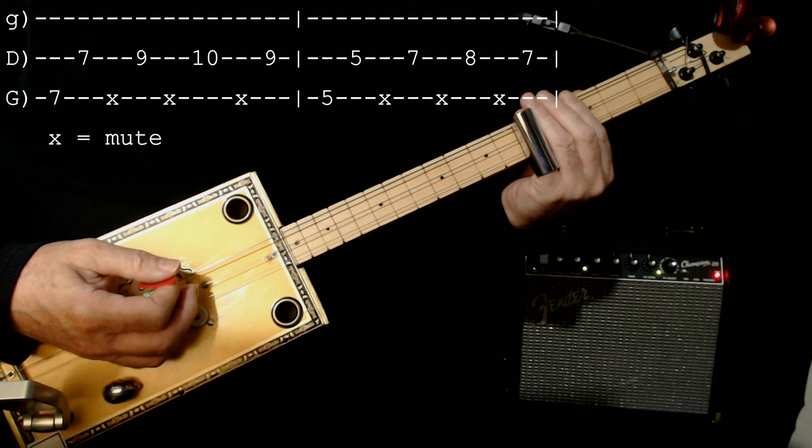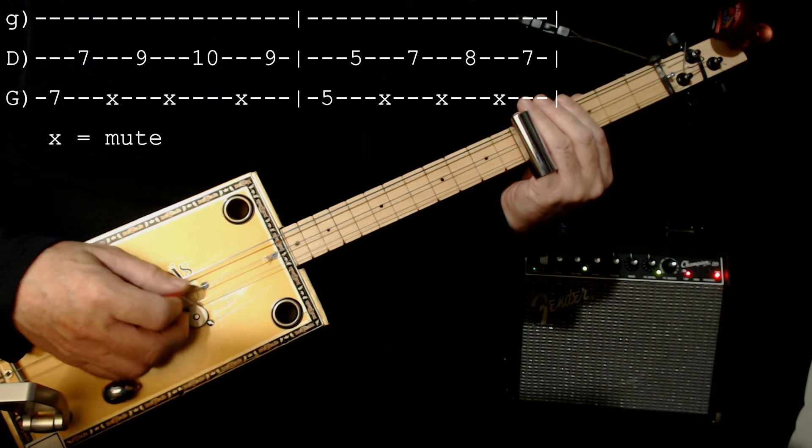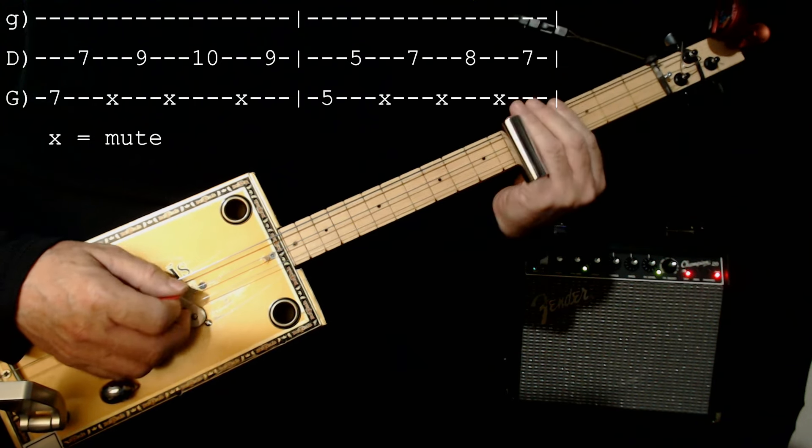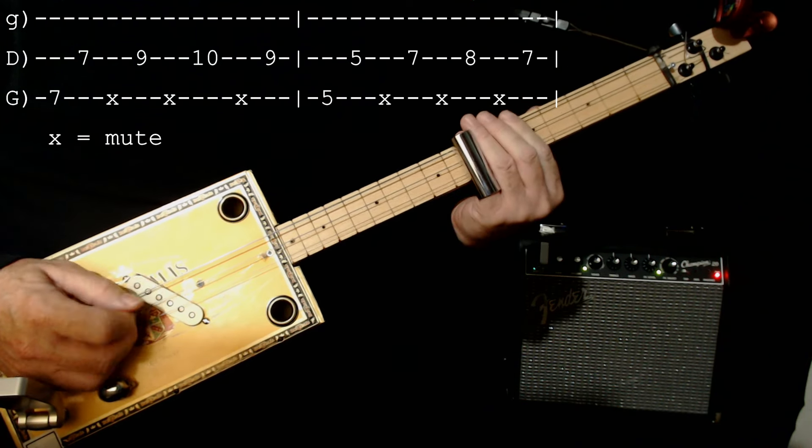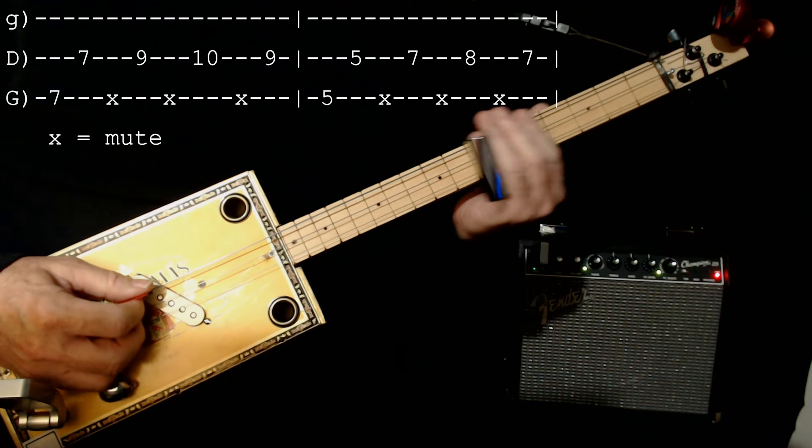On the five chord, which is a C chord, which would be five, five in the middle, five, seven, five, eight, five, seven. Okay, so I'll play that with the muting. I'll try to get that slower.